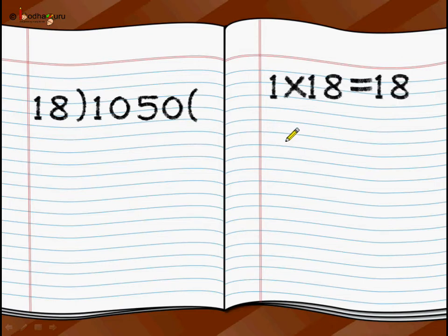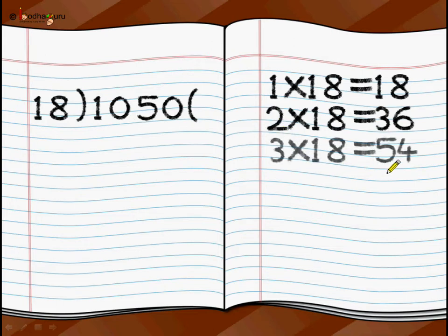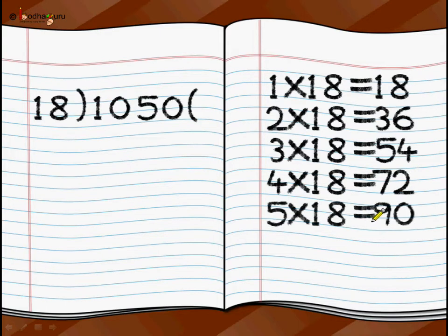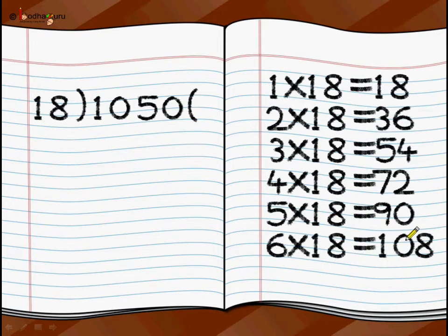So now let's start it. 1 times 18 is 18, 2 times 18 is 36. And where we are going to stop? When we reach either 105 or its greater value. 3 times 18 is 54. We haven't reached there. 4 times 18 is 72, 5 times 18 is 90, 6 times 18 is 108. Yes, 108 is more than 105. So we can stop. We don't need to move forward in the multiplication table.